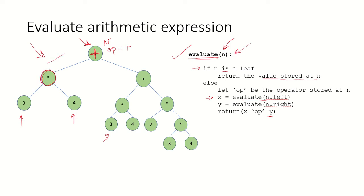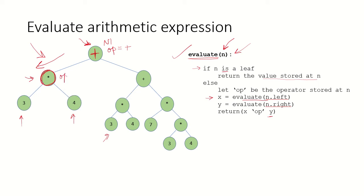When we come to this left subtree node, the first thing we do is check whether it is a leaf or not. Since it is not a leaf, we find out the operator stored at this node, which is the multiplication operator. The next statement is to evaluate its left subtree, so we go to that node. Since this is a leaf node, we return the value stored at n, which is returned in variable x equal to 3.